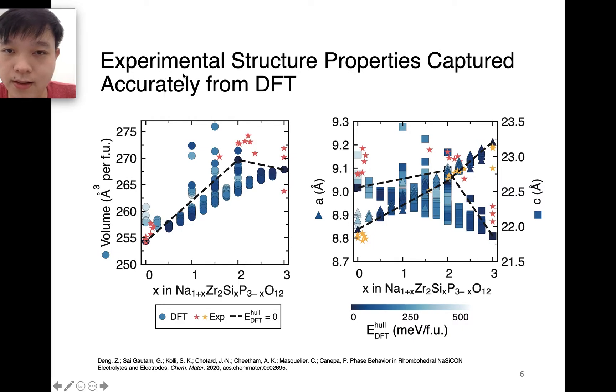First of all, let's look at the comparisons between the DFT calculations and experimental structure properties. The left side is the volume as a function of sodium composition. The stars are experimental values from different papers, and the color of each dot represents the energy. The darker the color, the more stable and lower the energy the structure is. When we connect these three most stable structures at zero, two, and three, we can see that we reproduce the trend of experiment. Basically, from zero to two, in the low concentration region, the volume will increase with sodium concentration, and from two to three, the volume will decrease. This experimental feature is well captured by our DFT calculation.